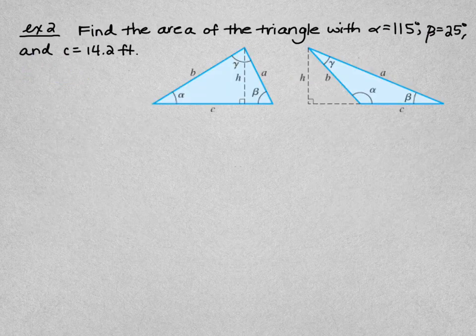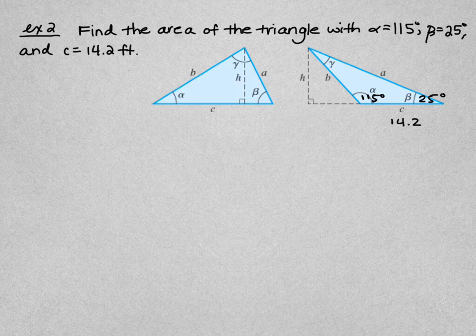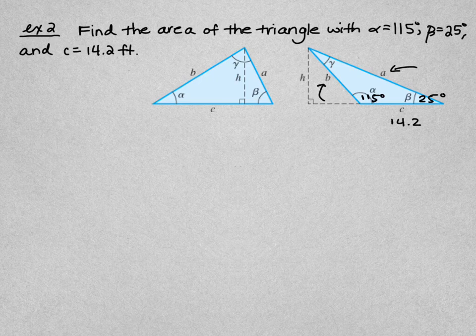Next example: find the area of the triangle with alpha equals 115°, beta equals 25°, and c equals 14.2. We have two angles and one side. To use the two-sides-and-included-angle formula, we need to find a or b. To use the Law of Sines for that, we need an angle and its opposite side — so we must first find gamma, since the only side we have is c.